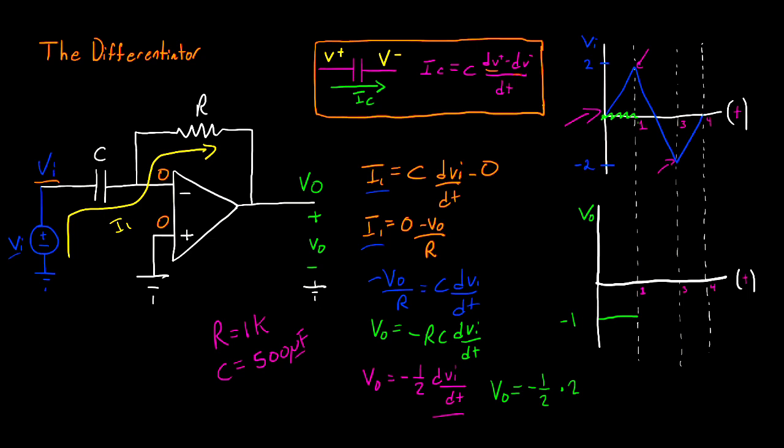Now at 1, and between 1 and 3, we go from 2 down to negative 2. And here our slope is going to be negative 2 minus 2 divided by 2, and this is equal to negative 2. So if we plug in our negative 2 value right here, then our output voltage is going to be a positive 1. So we'll put that in there.